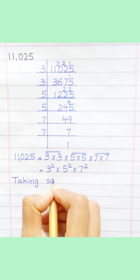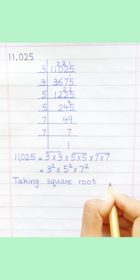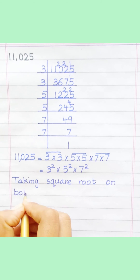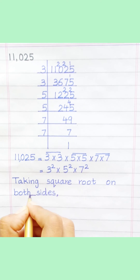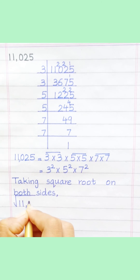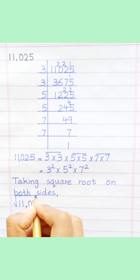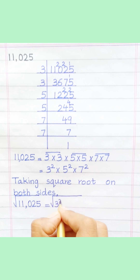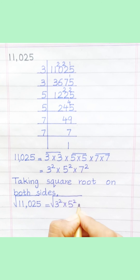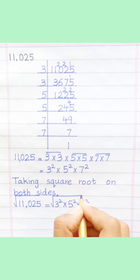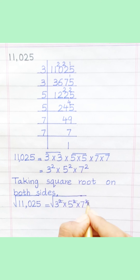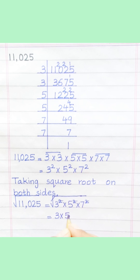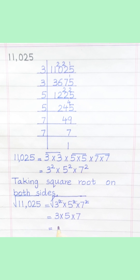Taking square root on both sides. Square root of eleven thousand and twenty-five equals square root of three squared, multiply five squared, multiply seven squared. Equal three multiply five, multiply seven. Equal one hundred and five.